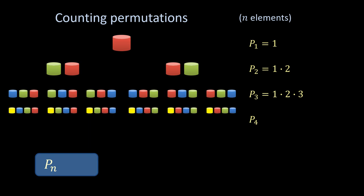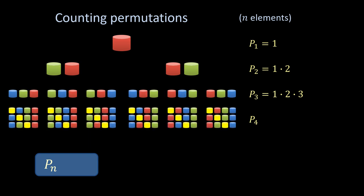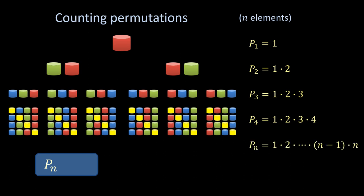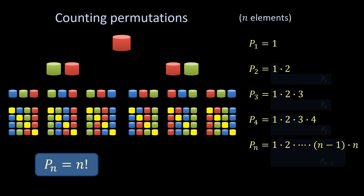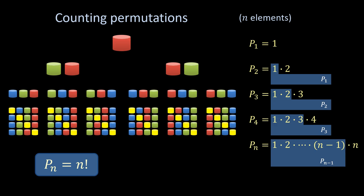And the same logic applies for each next element. So to count permutations, simply multiply all the integers from 1 up to n, the operation known as n factorial. n factorial can also be recursively defined as the number of permutations for n minus 1 elements, times n.